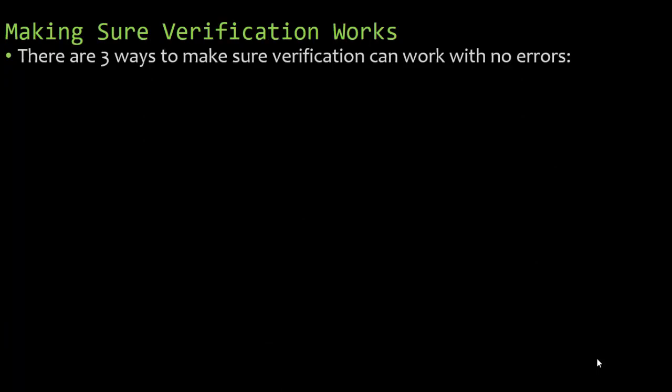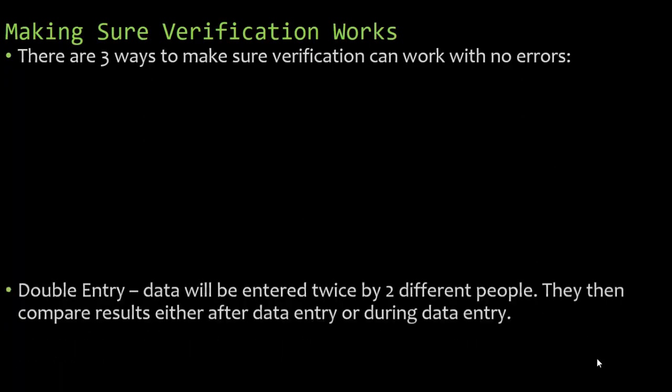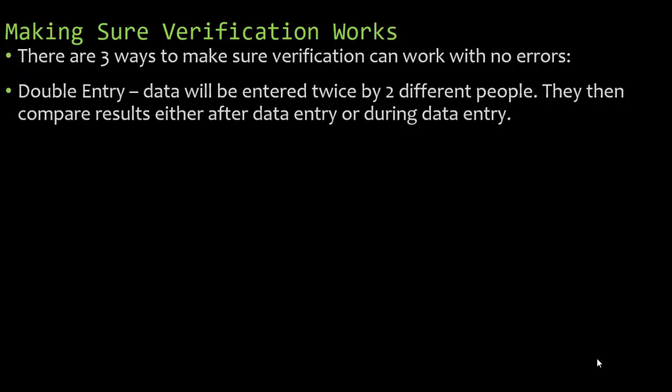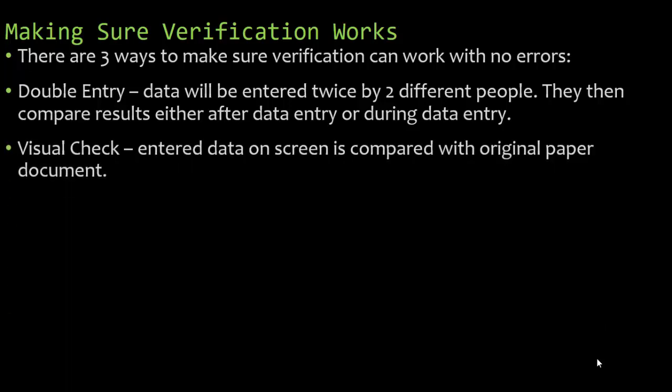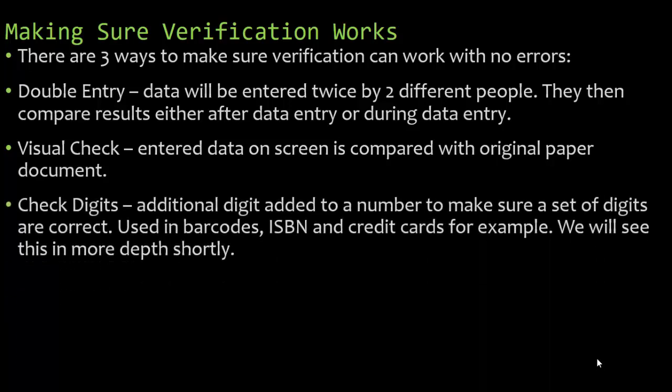There are three ways to make sure verification works with no errors. The first is double entry — data will be entered twice by two different people, who then compare the results either after or during data entry. If two different people enter the same data it should match, which really prevents the likelihood of an error.